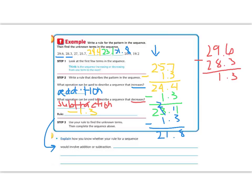Let's read the explain below. How do you know whether the rule for a sequence would involve addition or subtraction? Well, if we look up above at step 2, it says if the number is increasing, we're going to add. So let's write increase means add and decrease means subtract.